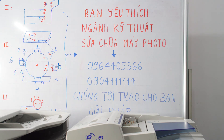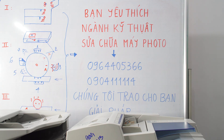90% anh chị và các bạn đang làm trong lĩnh vực máy photo chắc chắn sẽ đồng ý rằng: để xử lý những phần chúng ta cảm quan nhìn thấy, đó là xử lý những căn bệnh bằng hình ảnh, bằng tiếng kêu, những hiện tượng mà máy photo thể hiện ra cụ thể thì chúng ta sẽ giải quyết đơn giản hơn rất nhiều. Nhưng khi gặp những mã báo lỗi khiến máy photo bị treo và không thể sử dụng được, đó là những khó khăn mà chắc chắn rất nhiều anh chị và các bạn đang làm nghề đã ít nhiều trải qua.